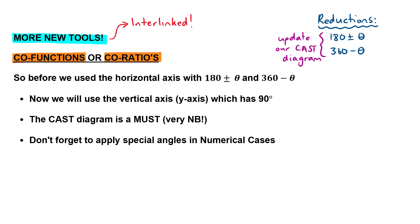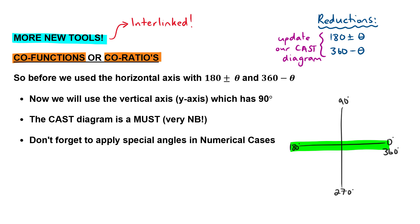In the first video you saw that the CAST diagram looked something like this, where we had 0, 90, 180, 270, and 360. For the reductions we focused on the x-axis — the horizontal axis — and we filled in our reductions as 180 minus theta, 180 plus theta, and 360 minus theta.